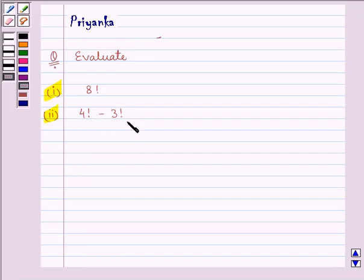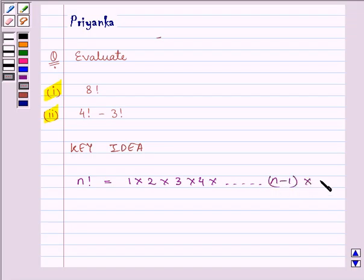The key idea behind this question is that whenever we need to find the factorial of a number, that is n factorial, we multiply 1 with 2 with 3 with 4, and so on, until we reach n minus 1 multiplied by n.